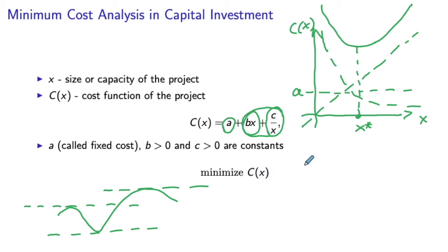C prime of x is given by the derivative of a constant is zero. Then the derivative of the linear term is b. And the derivative of this term is going to be minus c over x squared. And we need to make it equal to zero in order to find the candidate points for our minimizer.